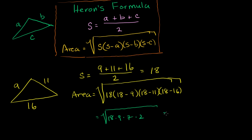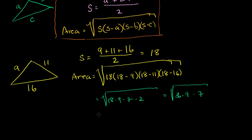Which is equal to, let's see, 2 times 18 is 36, so I'll just rearrange it a bit. This is equal to the square root of 36 times 9 times 7, which is equal to the square root of 36 times the square root of 9 times the square root of 7. The square root of 36 is just 6, this is just 3.